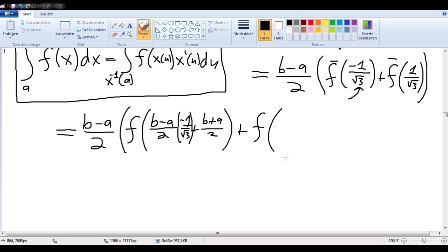And then here we have f of (b minus a) over 2 times 1 over the square root of 3 - that is a 1 - plus (b plus a) over 2.